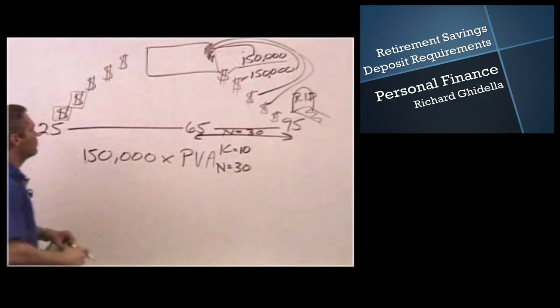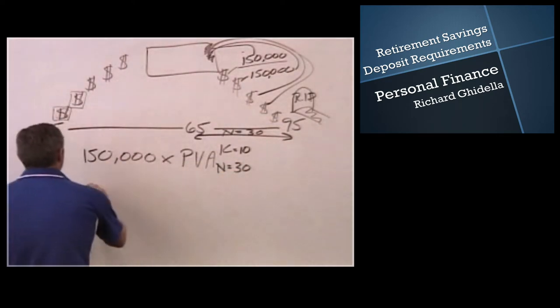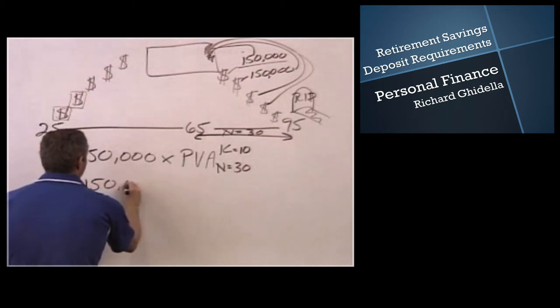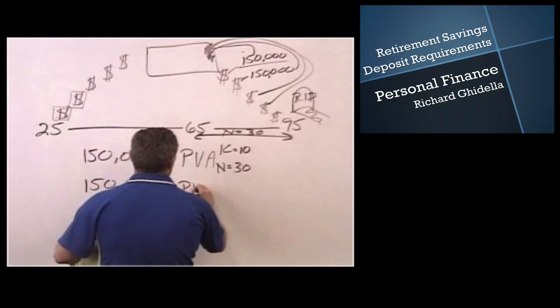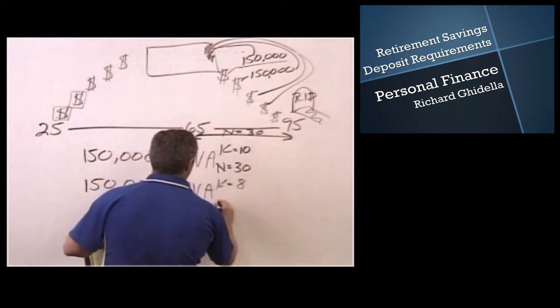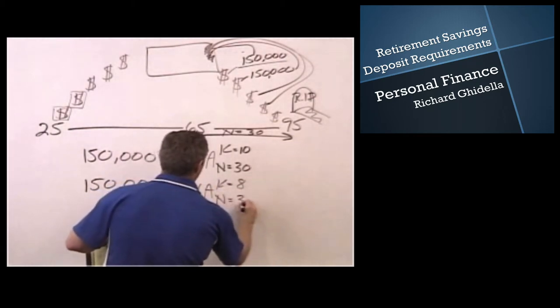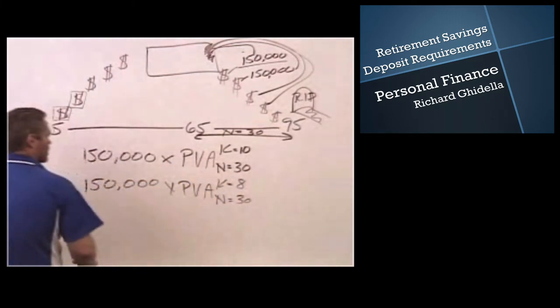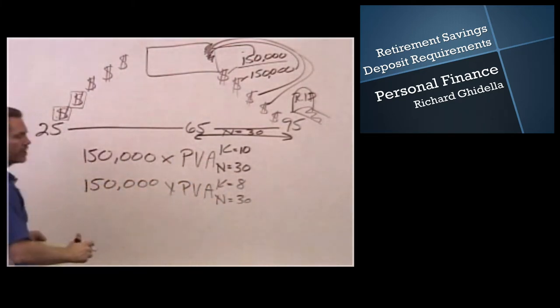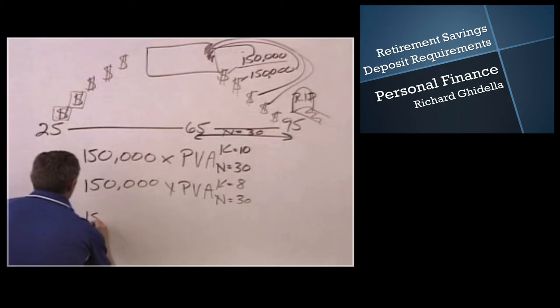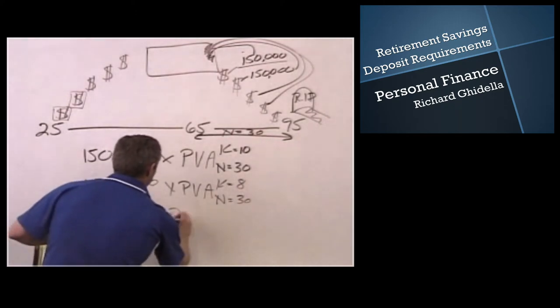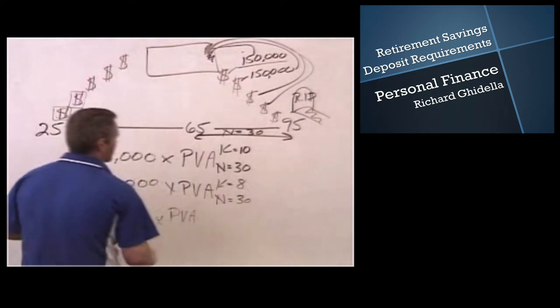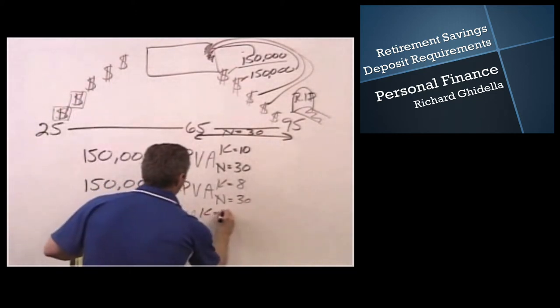I also want to calculate this to see if I got a slightly lower rate of return: $150,000 times present value of an annuity, K equals 8, N equals 30. And what if I only got a 4% rate of return? So it's $150,000 times present value of an annuity, K equals 4, N equals 30.